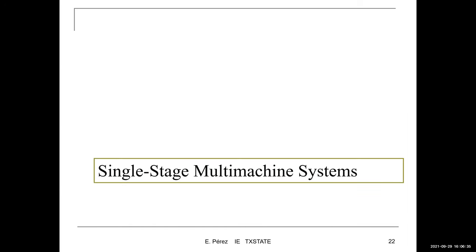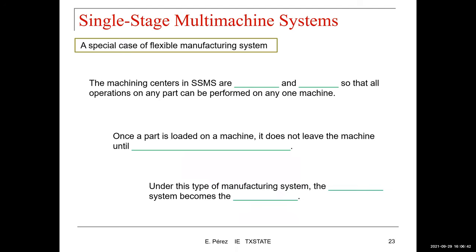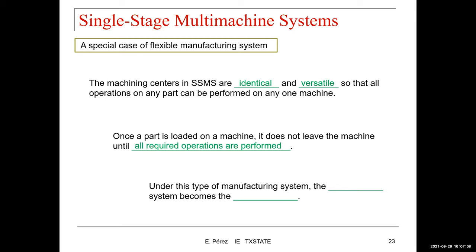The next type is the single-stage multi-machine system. This is a special case of flexible manufacturing systems. The machining centers in a single-stage system are identical and versatile, so all operations of any part can be performed on any one machine. Once a part is loaded on a machine, it does not leave the machine until all required operations are performed.